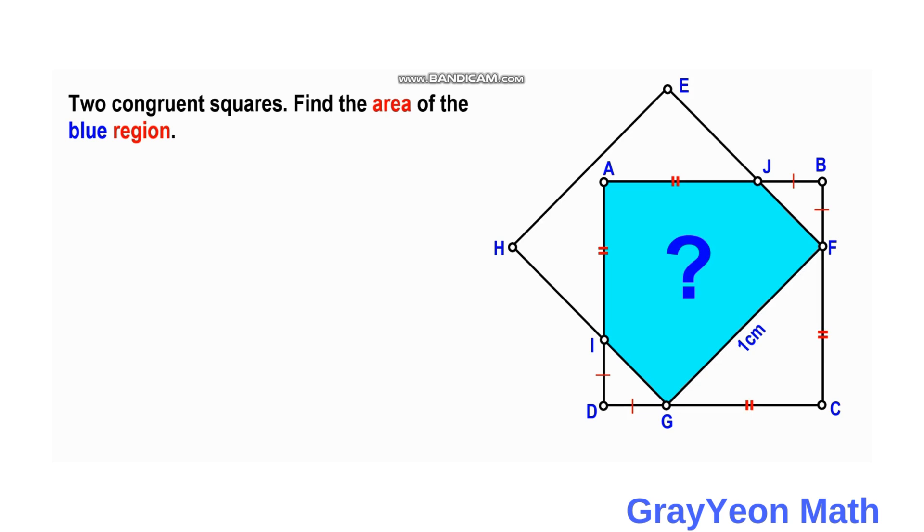So let's start with segment GF. This forms the hypotenuse of this right triangle. So if this is 1, then we need to divide this by square root of 2 to get this side GC and FC. So this will be 1 over square root of 2, and this will also be the same, 1 over square root of 2.